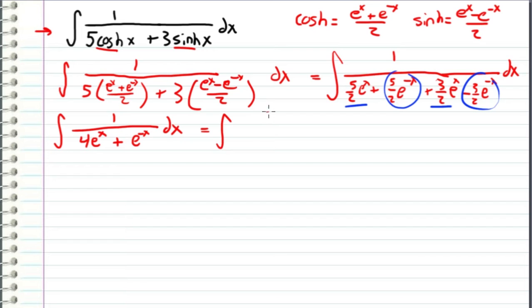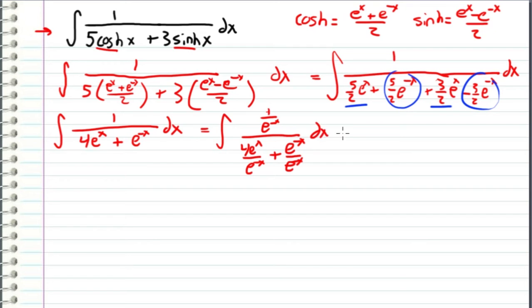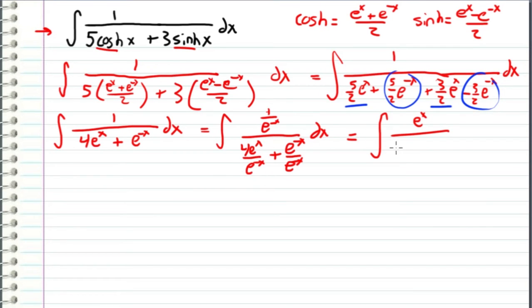When we do that, we get one over e^(-x) divided by 4e^x / e^(-x) plus e^(-x) / e^(-x), dx. Simplifying: the e^(-x) in the numerator flips up, the e^x in the denominator flips up making it 4e^(2x), and that last term cancels to one. So we get the integral of e^x / (4e^(2x) + 1) dx.